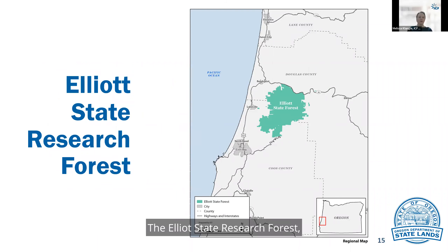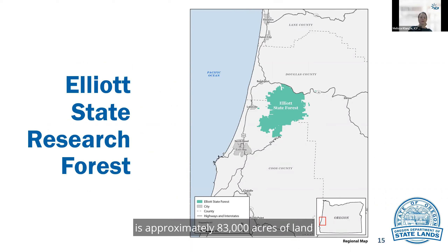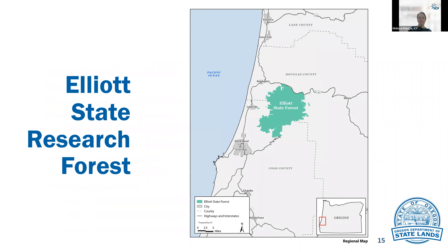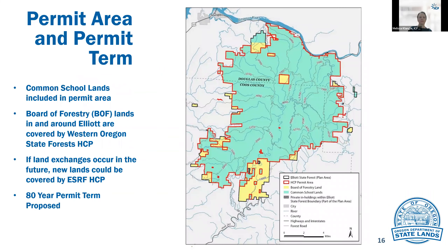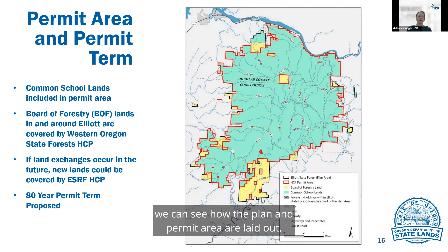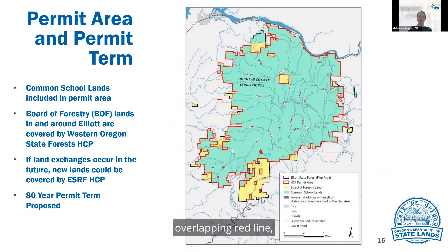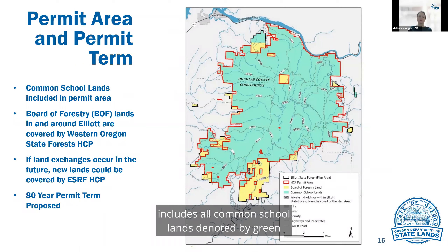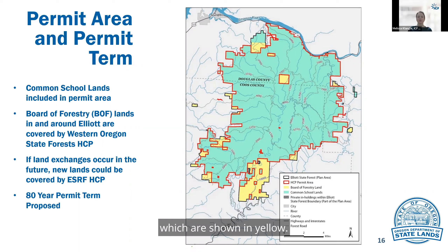The Elliott State Research Forest, which is represented in green on this map, is approximately 83,000 acres of land located in Coos and Douglas County. If we zoom in, we can see how the plan and permit area are laid out. The plan area, shown on this map with a black and in some cases overlapping red line, includes all common school lands, denoted by green, as well as border forestry lands, which are shown in yellow.